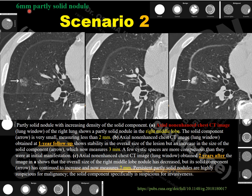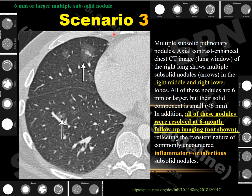Scenario 2: A 6 mm partly solid pulmonary nodule with solid and ground glass components in the right middle lobe. At one-year follow-up, the overall nodule size slightly decreased; however, the solid component became more prominent. At two-year follow-up, the solid component continued increasing in size despite the overall nodule size decreasing — highly suspicious for malignancy and invasion. Scenario 3: Multiple partly solid ground glass nodules (6 mm) in the right middle and lower lobes disappeared at six-month follow-up, representing inflammation or infection.